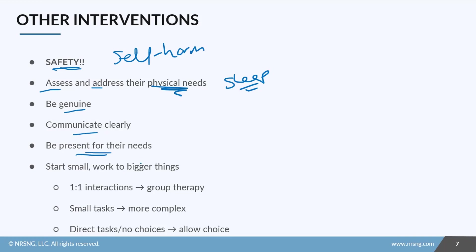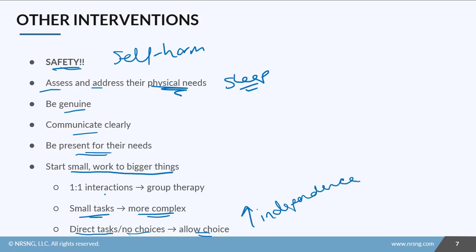With some disorganized thoughts, it's really good to start small and work up to those bigger things: start with one-on-one interactions and work to group sessions, start with small tasks and move to more complex tasks, and start with something very simple and direct with no choices, then move to allowing them to start making choices. We want to increase their independence and their ability to make logical and rational choices.